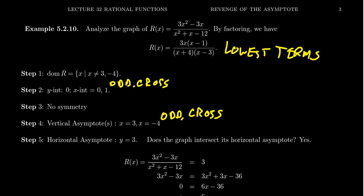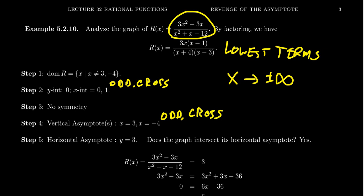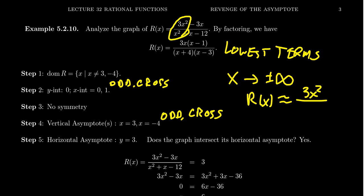For end behavior, I look at the original non-factored form. As x approaches ±∞, only the leading terms matter, so r(x) ≈ 3x²/x² = 3. This tells us there is a horizontal asymptote at y = 3, meaning y approaches 3 as x approaches positive or negative infinity.